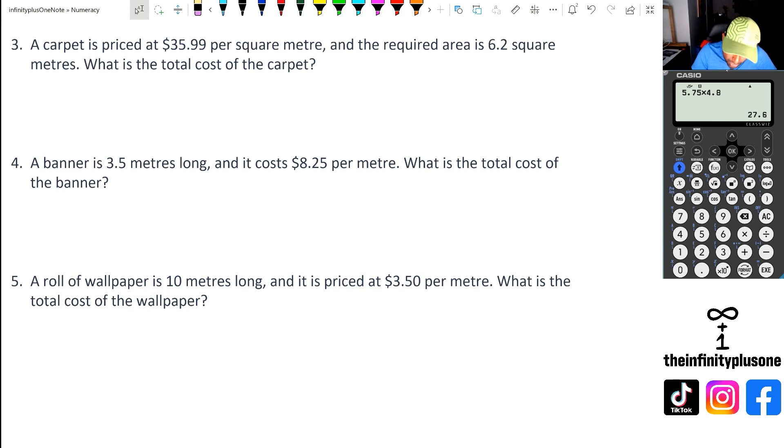So we've got square meter. It is $35.99 per square meter, and we've got 6.2 square meters. So we've got 35.99 multiplied by 6.2. Let's find out what it gives us times 6.2, and that's going to give us this. Now, remember that we've done this before with rounding numbers.